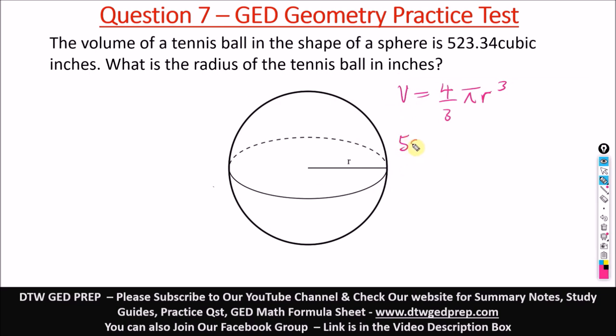Okay, so we're looking for the radius. We know V is 523.34, equal to four over three, pi is 3.14, then times r cubed. Pi will always be given as 3.14. You'll see it in the question and your GED formula sheet.